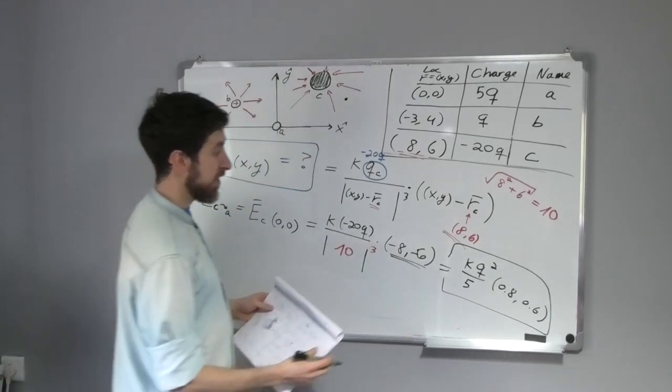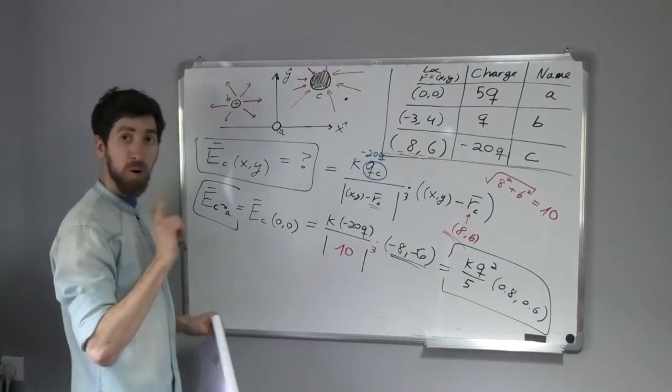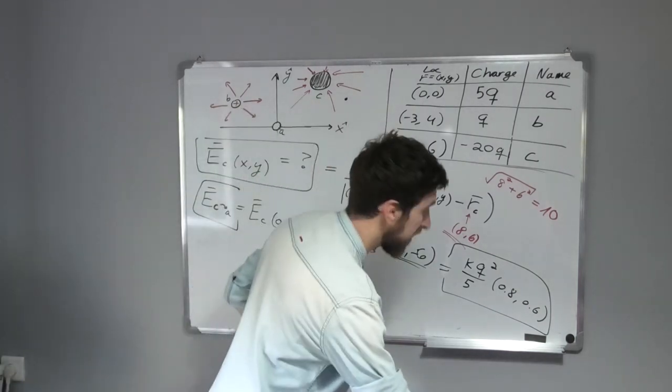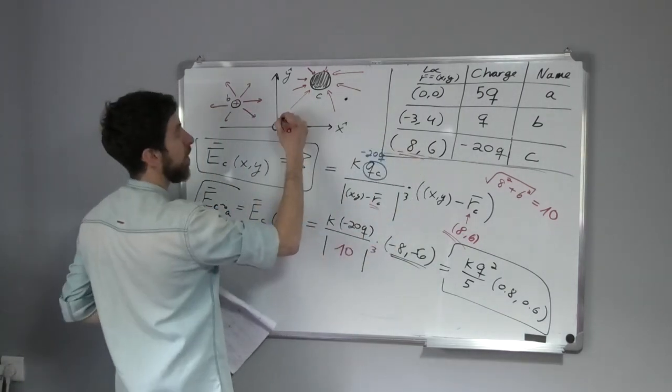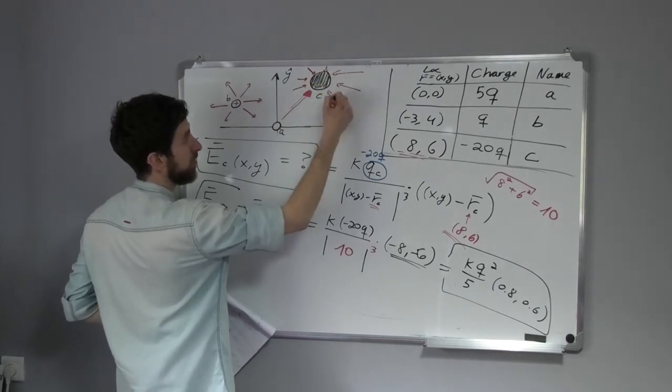And this is the electric field that only Marvel C applies on Marvel A. Okay, let's see that the sign is okay. So we said that we expect that this is like a hole, right?